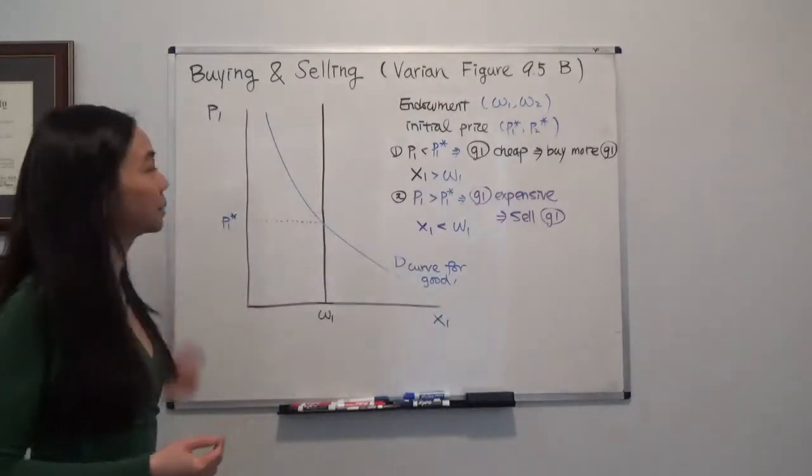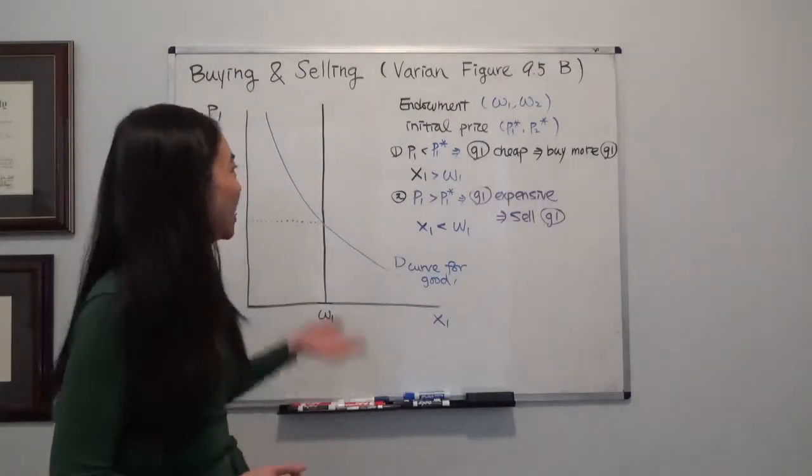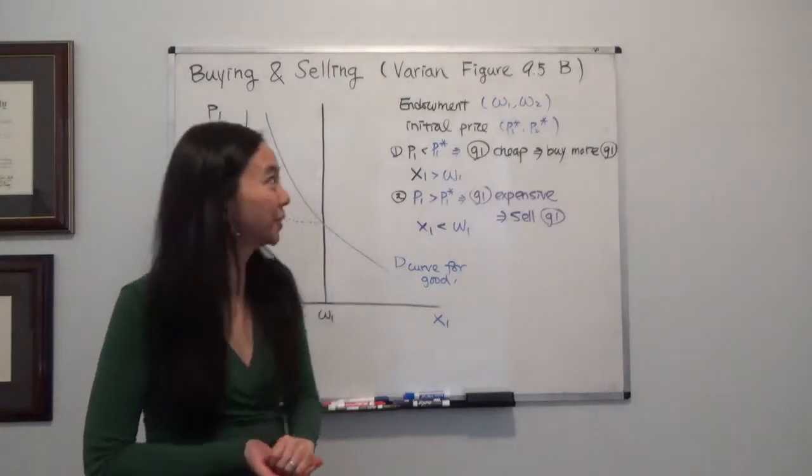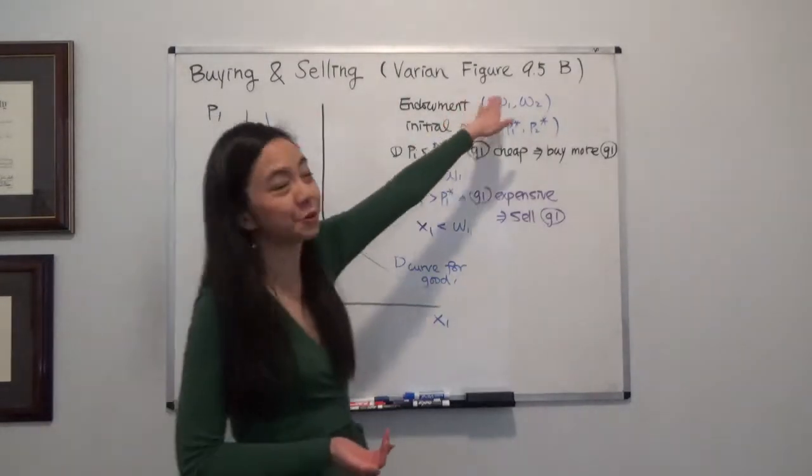Today we're going to continue to talk about buying and selling, and in particular this is Varian's Intermediate Microeconomics book, chapter 9, figure 9.5b.